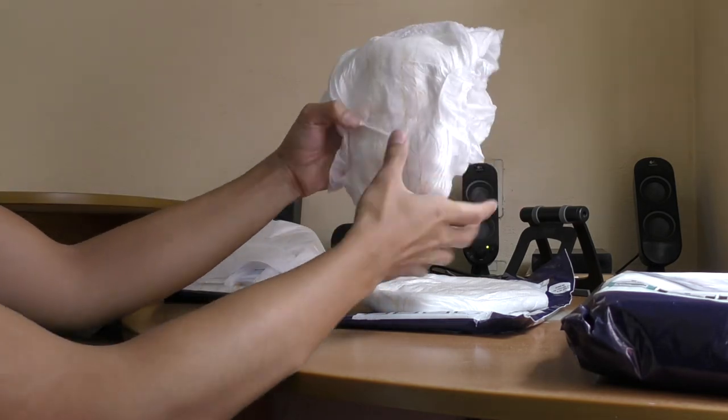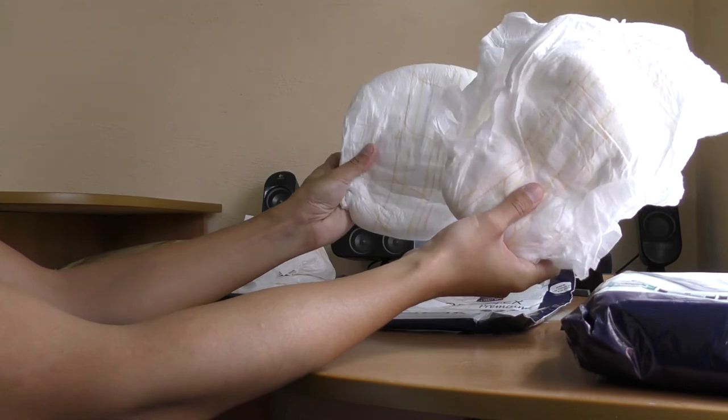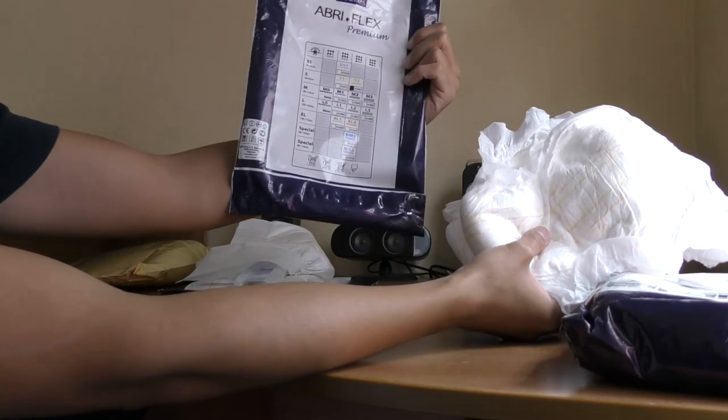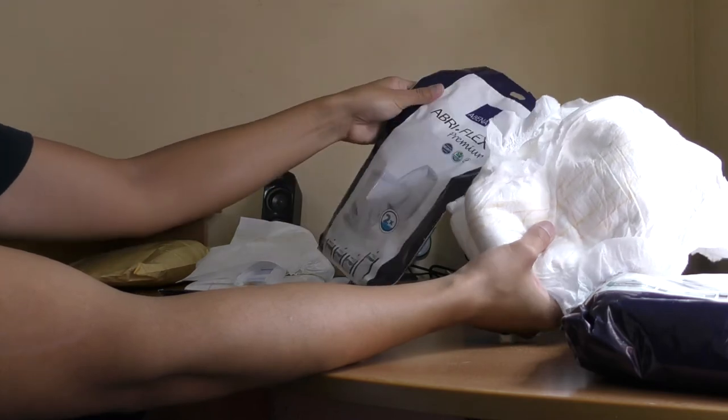The wetness indicator. So, this is the Abri Flex Premium S2 in pull up.